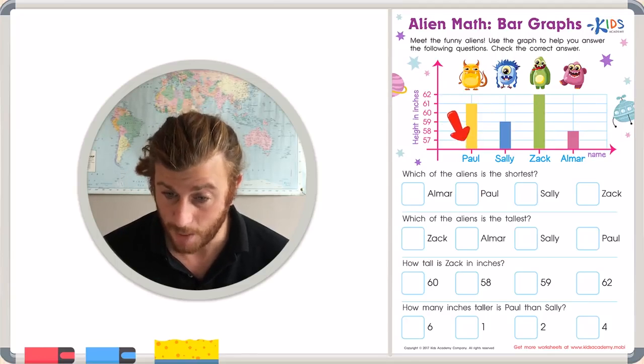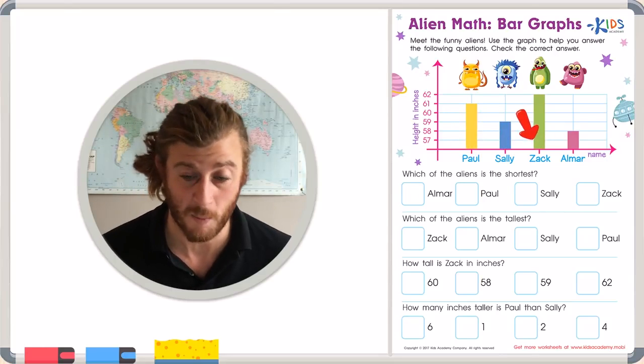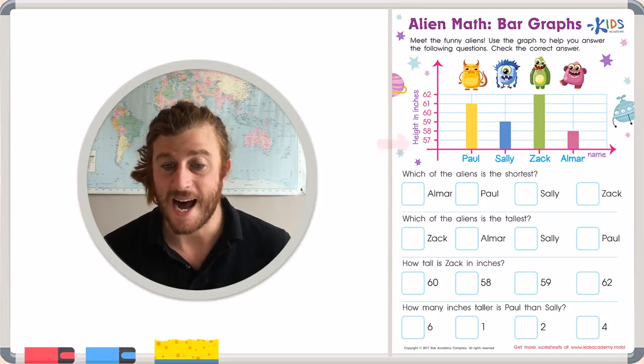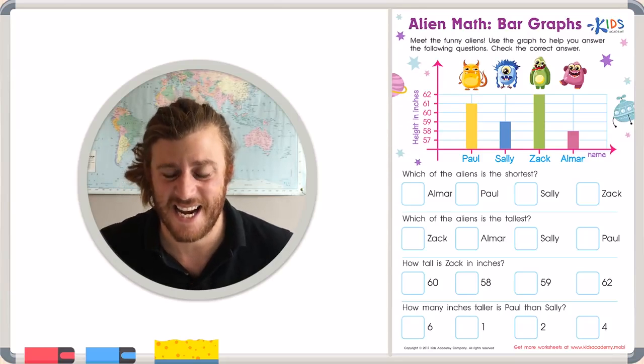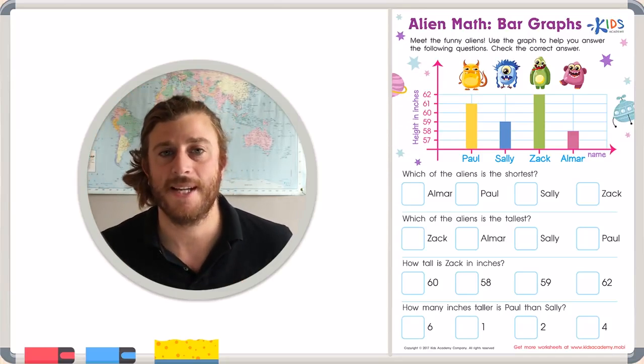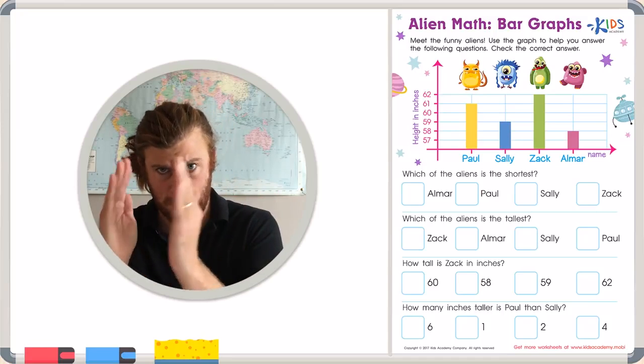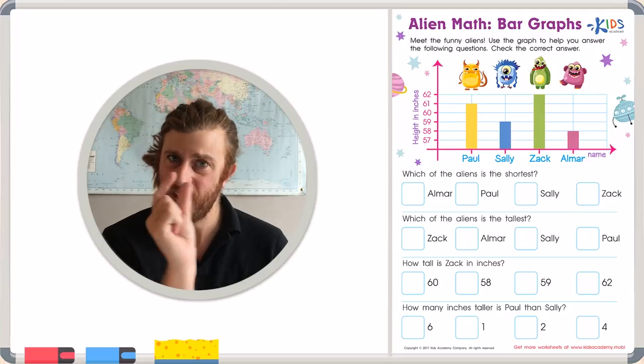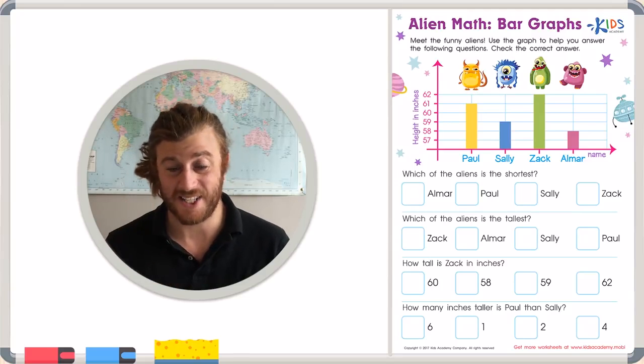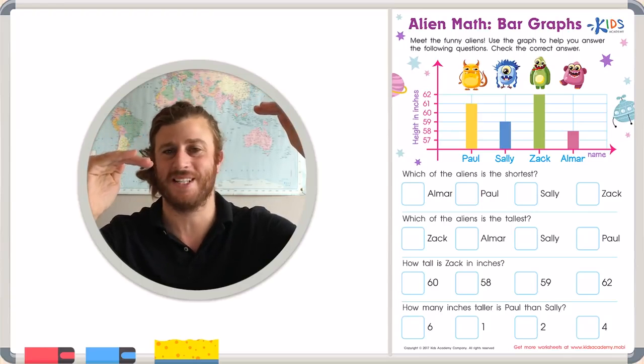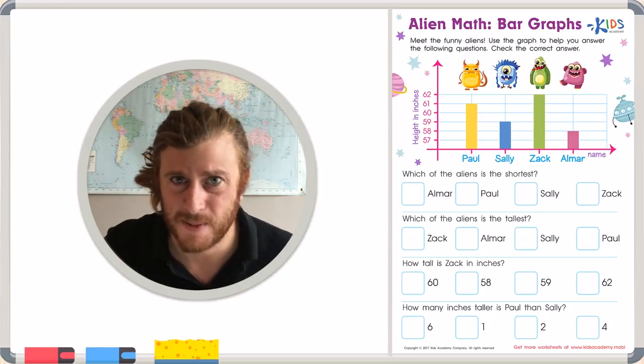The aliens' names are Paul, Sally, Zach, and Omar. On the left side of the graph I see their height in inches. This is going to tell me how tall each alien is on their own. Because each alien has their own bar, I can see how tall each alien is and then I can even compare the alien's height just by using my eyes.